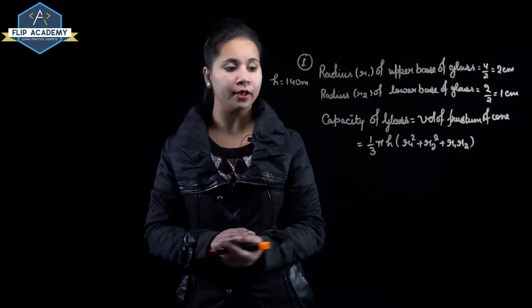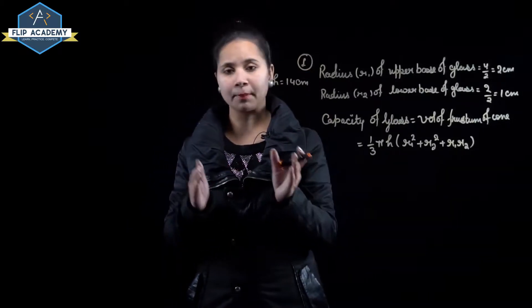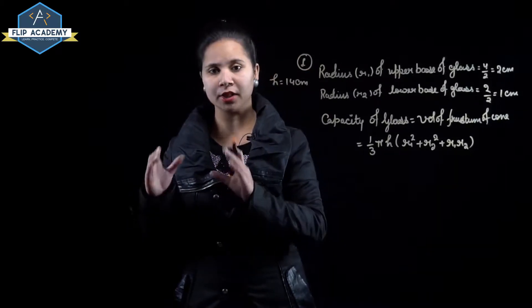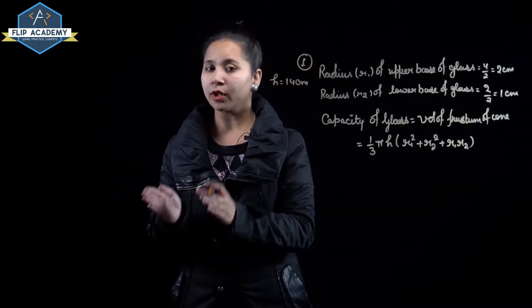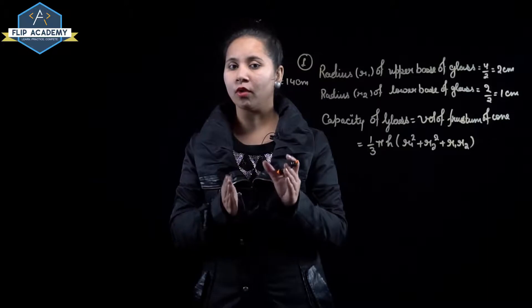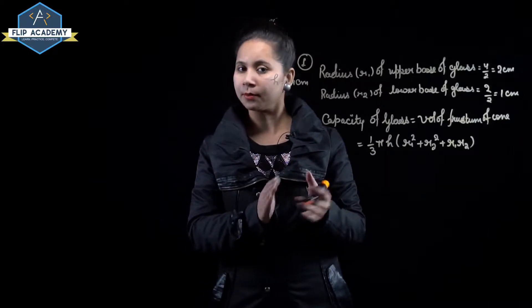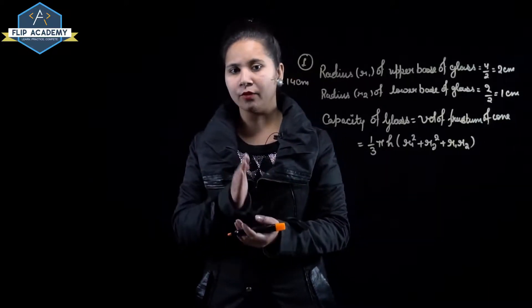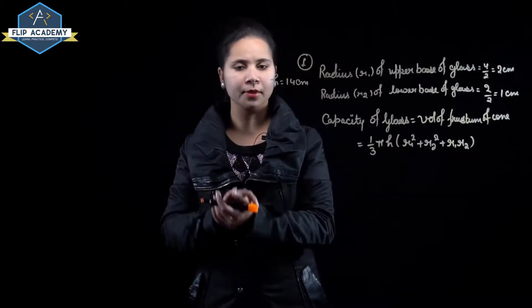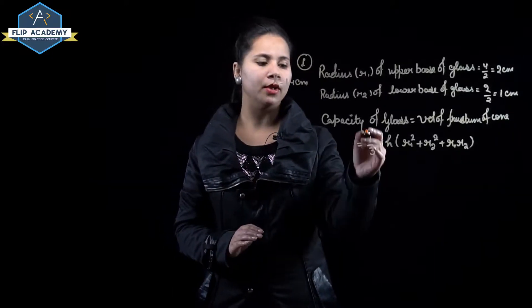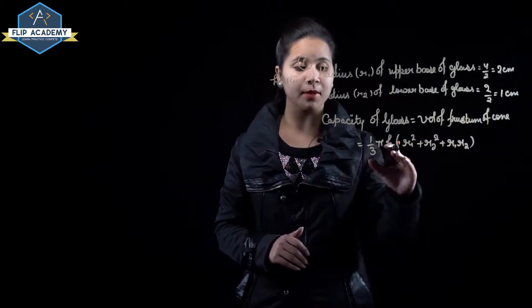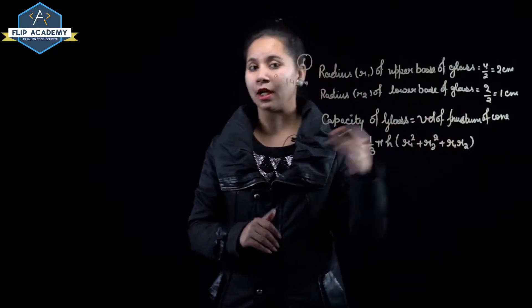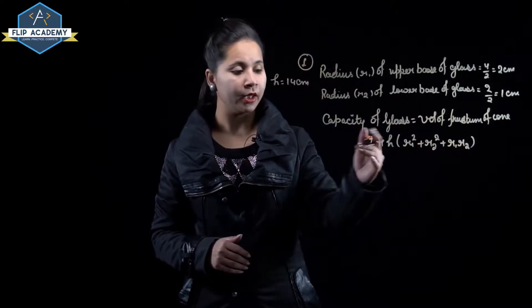The capacity of the glass means how much water the glass can hold, which equals the volume of the frustum. Volume of frustum is equal to 1 upon 3 pi h, within bracket r1 square plus r2 square plus r1 r2.